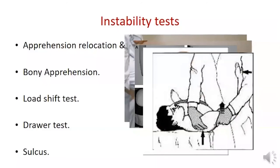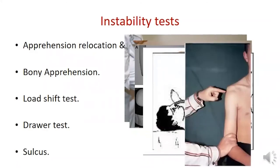The drawer test is performed with the patient supine, arm abducted to 60 degrees. The examiner applies an axial force in neutral rotation and translates the humeral head both anteriorly and posteriorly. Grade 1 is translation over the rim; grade 2 spontaneously reduces; grade 3 is dislocation without spontaneous reduction. The sulcus test is performed with the arm adducted; the arm is pulled inferiorly and translation of 1 cm is 1-plus, 2 cm is 2-plus.